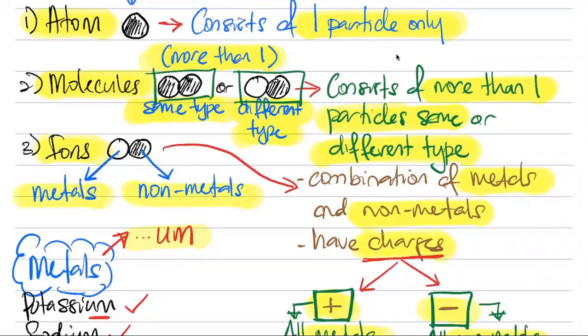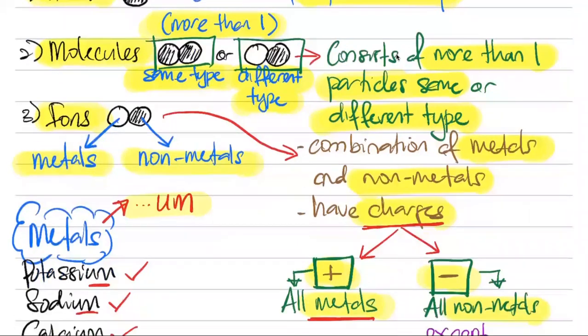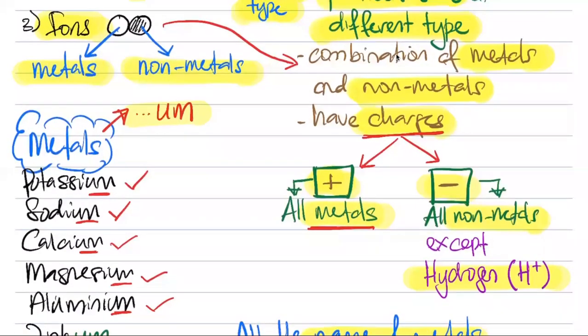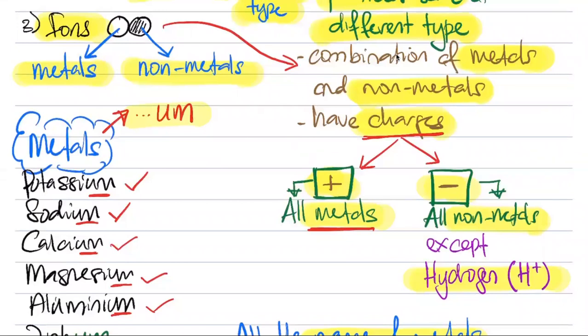And the next point you also need to know is that ions have got something we call as charges. What are the charges we have inside the ions? You go back to your Form 2 under the subject of water and solution. You will study there are only two types of ions: one is cations and one is anions. The same thing goes here. Ions, we have positive and we have negative. All positive belongs to the metal and all negative belongs to the non-metal except for one person which is hydrogen. Now I want you to remember this: only hydrogen has got a positive charge, the rest are all negative.